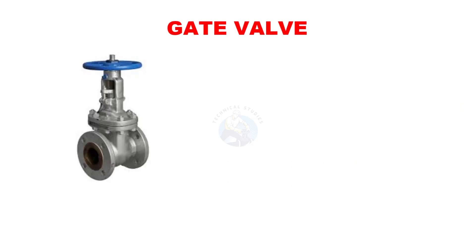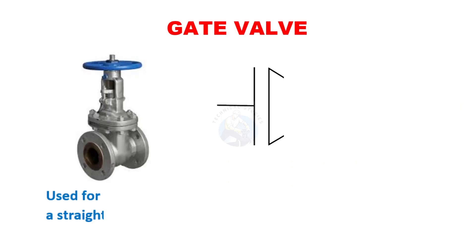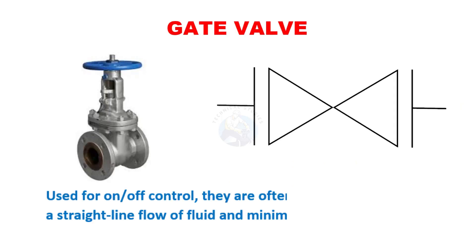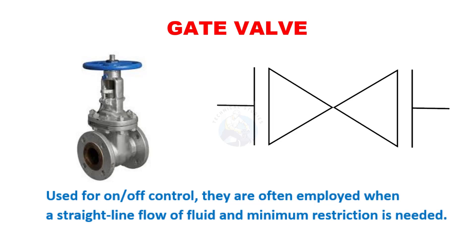The first one is the gate valve. Gate valves are used for on and off control. They are often employed when a straight-line flow of fluid and minimum restriction is needed.